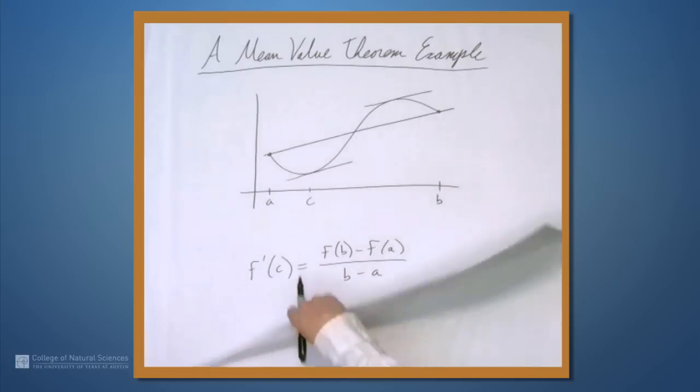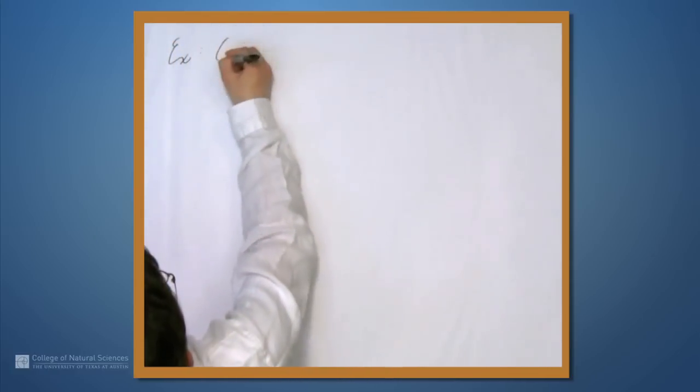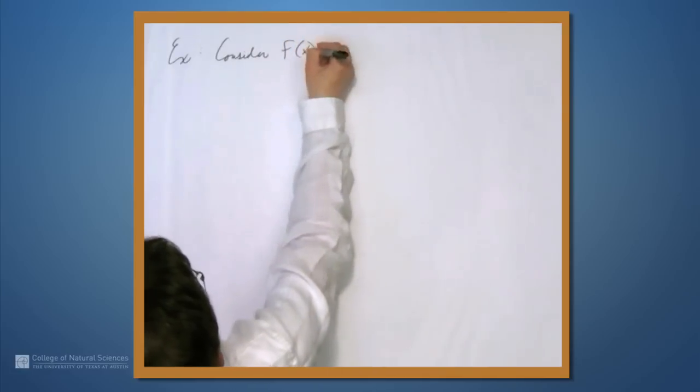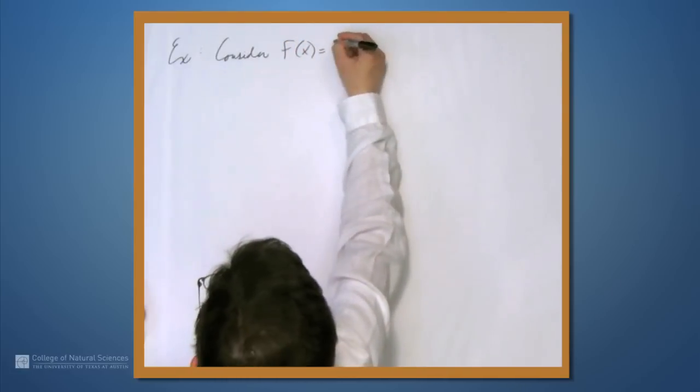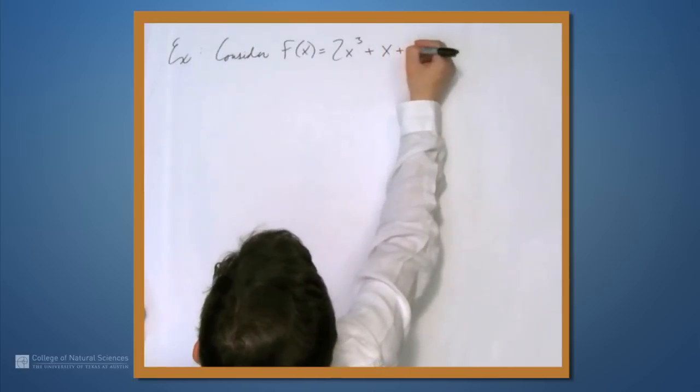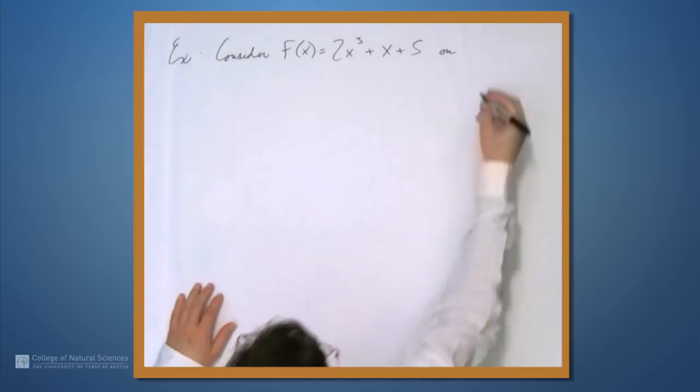So let's look at an example. Let's consider the function f(x) = 2x³ + x + 5 on the interval [1, 4].